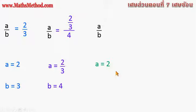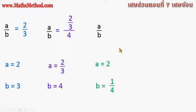If A is 2 and B is 1.4, then A over B is 2 over 1.4. This is the answer in this form.